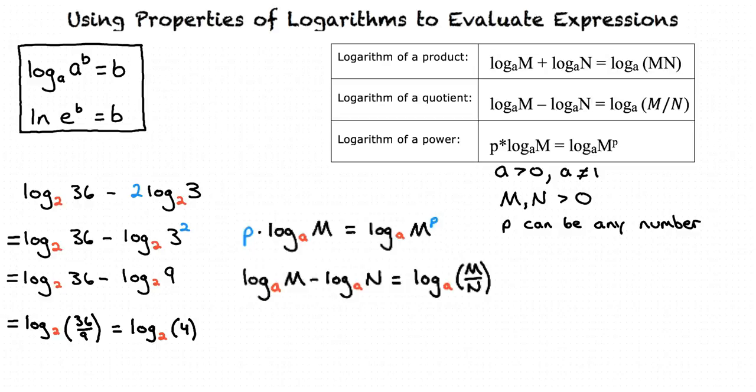So substituting 4 with the equivalent value 2 squared allows us to have the same number. And looking at the definition of a logarithm, we can see that this term simplifies to 2.